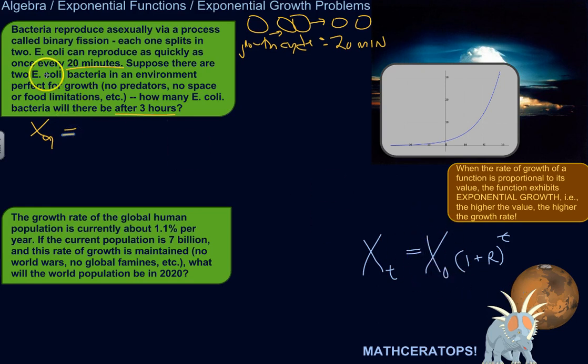So the amount of bacteria after nine hours will equal x of zero, the beginning number. So suppose there are two E. coli, so just two bacteria at time zero, at the beginning, times one plus the rate of growth. So what's the rate of growth? Well, each one splits in two. So the number grows by 100% each time. So my growth rate will be 100%, which if I were to turn that into a number that I can use in an equation, I would call that one. So one plus one is two, meaning the population doubles every growth cycle.